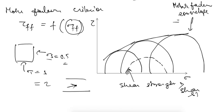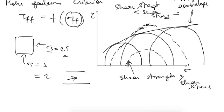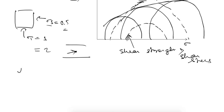But if the stress is such that the Mohr circle goes above the Mohr envelope, then for some planes on that circle shear strength is less than shear stress, meaning failure will happen. Therefore, no circle can cross the Mohr failure envelope. That is what Mohr said. After this, there is the Coulomb hypothesis.